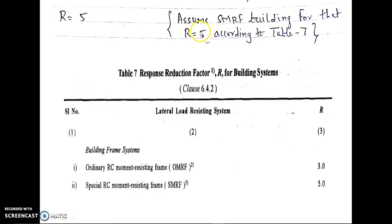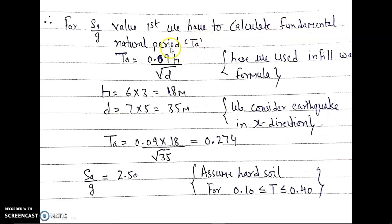Now we have to find SA/G. For that we first need to find TA, the fundamental natural period. We use the formula TA = 0.09H / √D. This formula is used for buildings with infill walls, as a wall is given in our question. If no wall is present, we would use the formula TA = 0.075 × H^0.75.